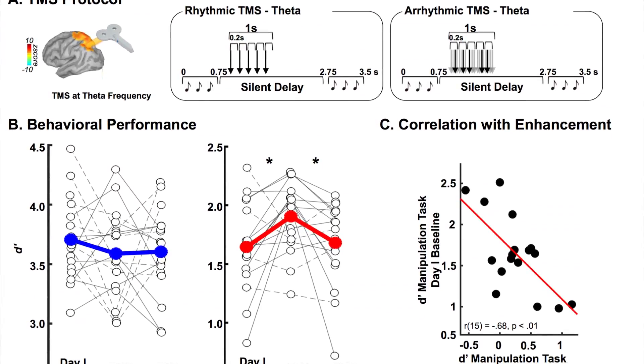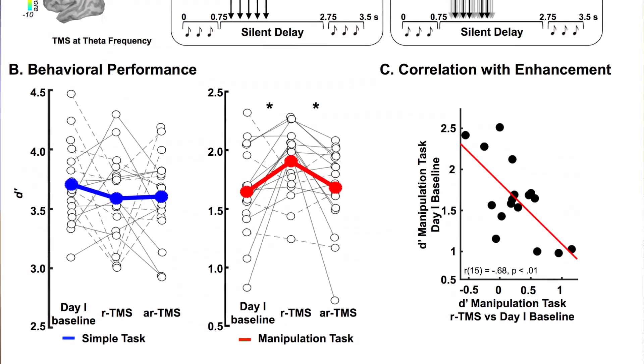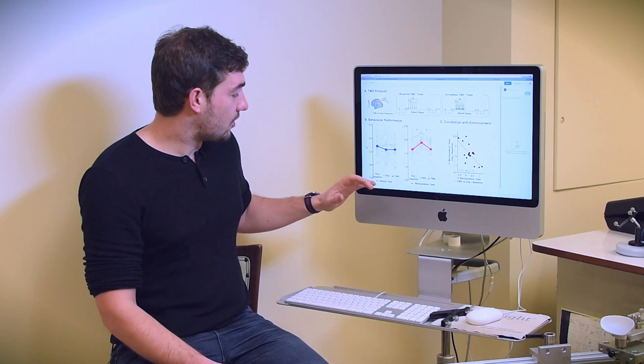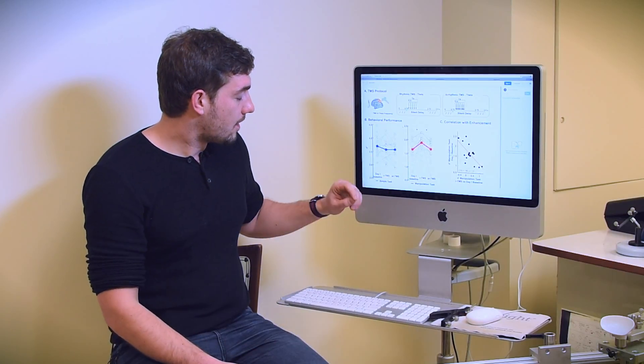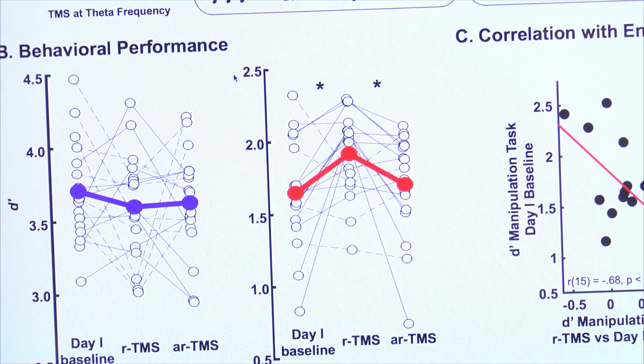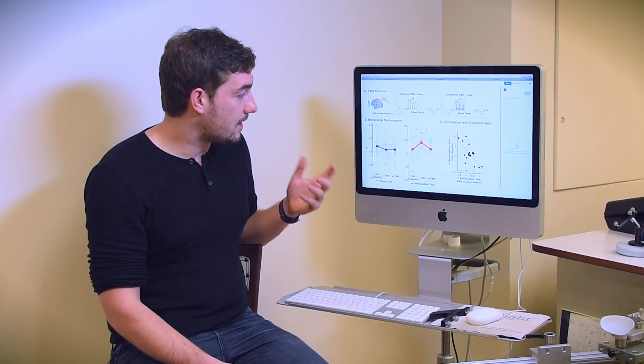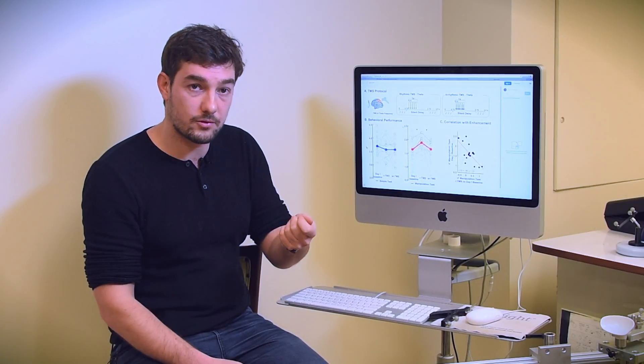In terms of behavior, we made the causal link between theta oscillations and behavior with stimulation. The stimulation, rhythmic or arrhythmic, did not change anything for the simple task where you don't manipulate information. But for the manipulation task, the benefit in performance was observed mainly for rhythmic stimulation. This makes a link between ongoing oscillations that are already present: if we can entrain those oscillations, we specifically boost participants' performance on the given task.